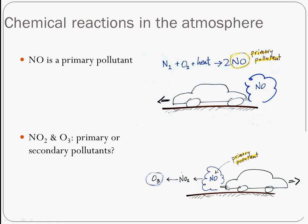Here's another question. We have nitrogen oxide coming right out of the tailpipe — that's a primary pollutant. But then some chemistry occurs that creates nitrogen dioxide and ultimately ozone. Are those two pollutants primary or secondary? The answer is secondary pollutants — they don't come straight out of the tailpipe. They're formed through reactions of nitrogen oxide with other things in the atmosphere.